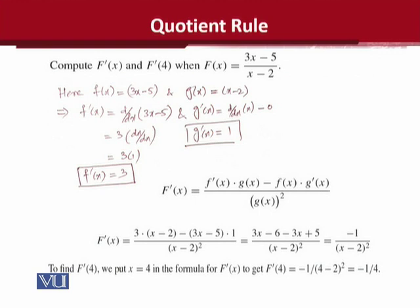Now this is an example that we are assuming there is a function F of x جس کی value ہے 3x minus 5 divided by x minus 2. یہاں پر f of x ہم کہہ سکتے ہیں 3x minus 5 کو اور g of x کہہ سکتے ہیں x minus 2 کو جیسے کہ ہم نے ابھی rule میں دیکھا numerator and denominator